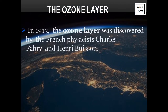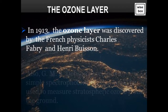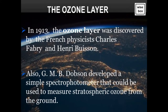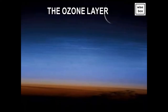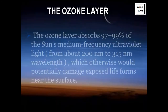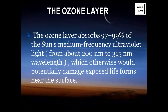In 1913, the ozone layer was discovered by the French physicists Charles Fabry and Henri Boisson. GMB Dobson also developed a simple spectrophotometer that could be used to measure stratospheric ozone from the ground. The ozone layer absorbs 97 to 99% of the Sun's medium-frequency ultraviolet light, from about 200 nanometers to 315 nanometers wavelength, which otherwise would potentially damage exposed life forms near the surface.